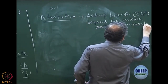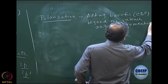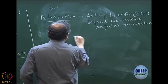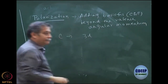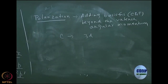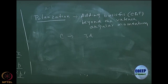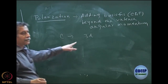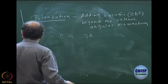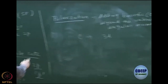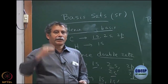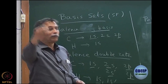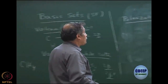For example, for carbon that would mean adding D functions — 3D. Adding 3D functions is important for carbon because the valence angular momentum is P; it stops at P. You have to add at least one more. You can even add two more.